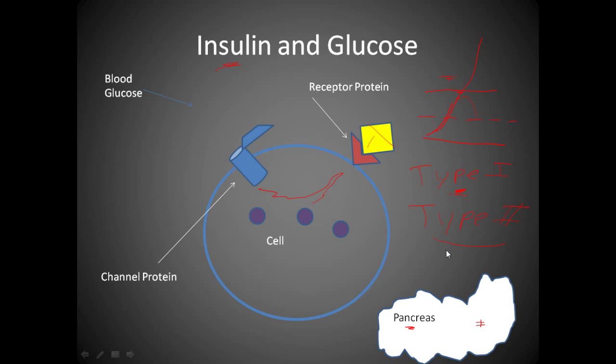Type 2 diabetics, not always, but most of the time through lifestyle changes, can really help, I don't want to say cure the disease, but control the disease. So they can maintain healthy blood sugar levels. That just shows you how all these proteins within the cell work together.